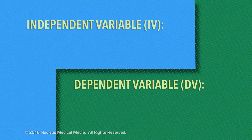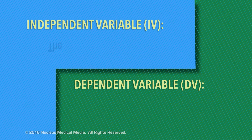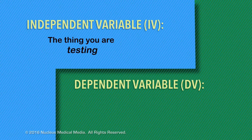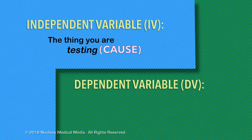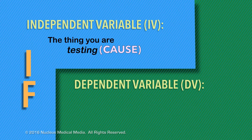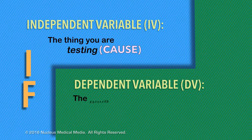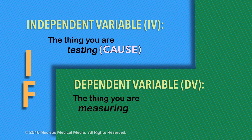So, to review: the independent variable is the thing that you're testing. Sometimes this is referred to as the cause in an experiment — it is also the 'if' part of your hypothesis. The dependent variable, the thing you're measuring, is the effect. It is also the 'then' part of your hypothesis.